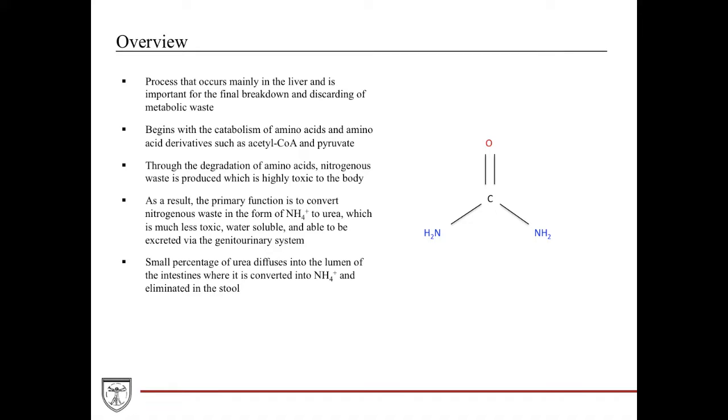When the body breaks down amino acids or amino acid derivatives, it creates a very toxic nitrogenous waste. This nitrogenous waste can cause a lot of toxic alterations and deficits in the neurological system. You need urea in order to remove this so it doesn't build up in the tissues.